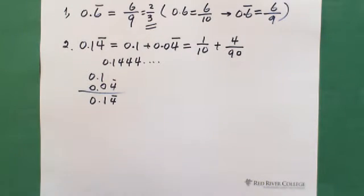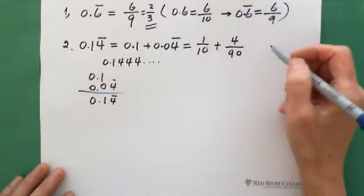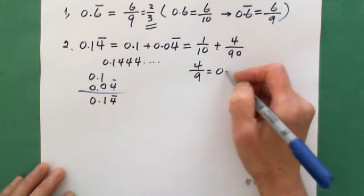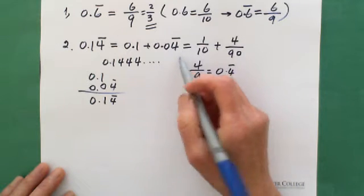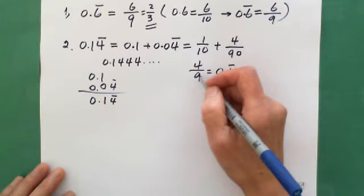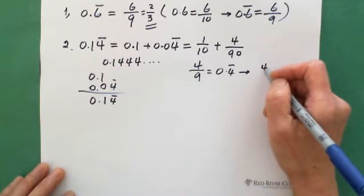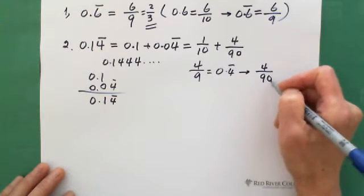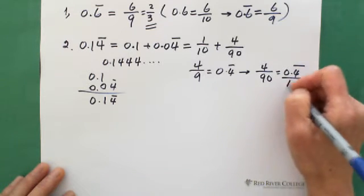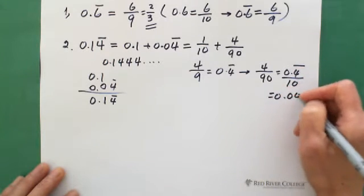The reason is: one-digit repeating is always related to a denominator of 9, so 4 over 9 equals 0.4 repeating. But 0.04 repeating actually means 0.4 repeating divided by another 10, so we put another 10 in the denominator. That's why this one is 4 over 90 — which gives you 0.04 repeating.